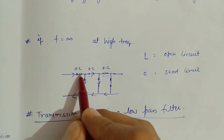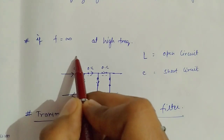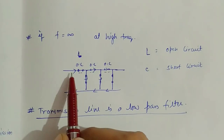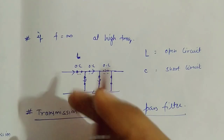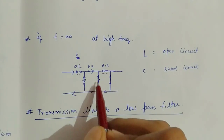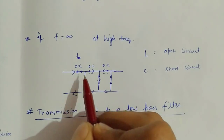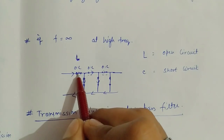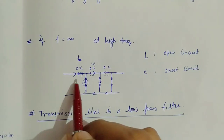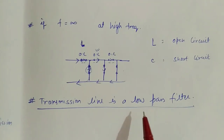But if we consider the case of high frequency, inductance will be open circuit and capacitance will be short-circuited. In the first stage itself, when L is open at high frequency, there will be no signal — we cannot pass the signal from input to output. Even if there is a small reactance, it gets short-circuited. We will find open circuits blocking the signal. Even if something is short-circuited, we will not get any signal because of the open inductance. At high frequency, no signal passes from input to output. That is why a transmission line is also called a low-pass filter.